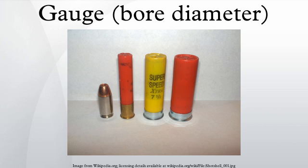Thompson Center makes special pistol barrels in .38/.357, .44, and .45 Colt that have straight rifled chokes in them to reduce the spin of the shot column and produce better patterns, but they are still suitable only for pest control at very short ranges.